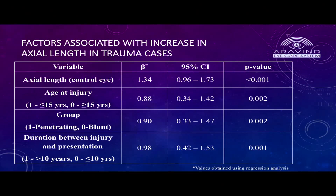In the final table, we calculated how much axial length increases in the traumatic eye compared to the normal eye. Using regression analysis, we obtained a factor of 1.34. So if a person has elongation of 1 mm in the normal eye, the axial length in the traumatic eye would be 1.34 mm more. Other statistically significant factors responsible for axial length elongation were also identified.